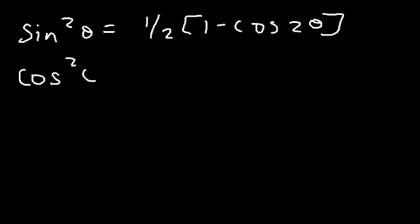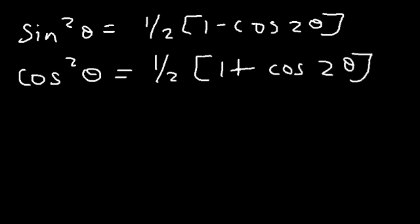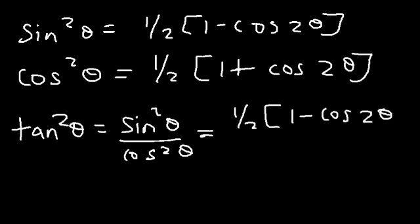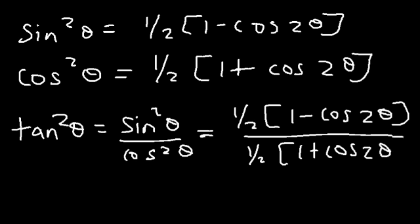The formula for cosine squared theta is one-half times (1 plus cosine 2θ), as opposed to 1 minus cosine 2θ. For tangent squared theta, since tangent equals sine squared over cosine squared, we get (one-half)(1 minus cosine 2θ) divided by (one-half)(1 plus cosine 2θ). The one-halves cancel, so tangent squared theta equals (1 minus cosine 2θ) divided by (1 plus cosine 2θ).